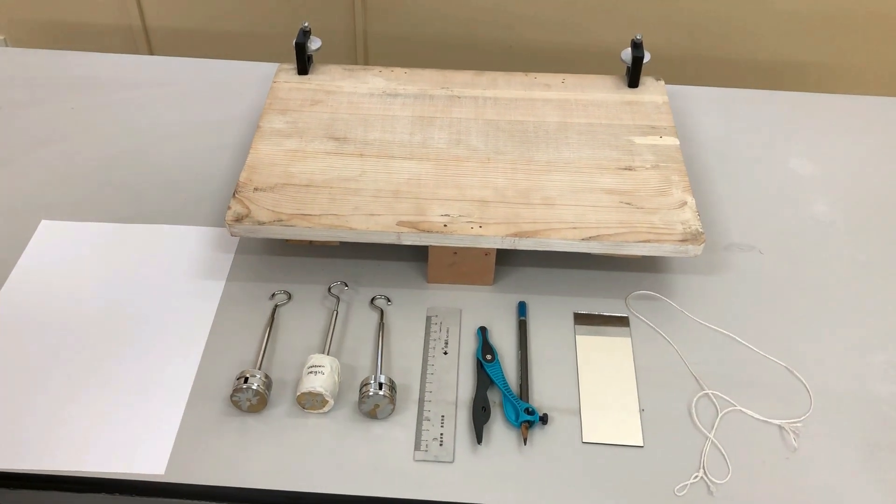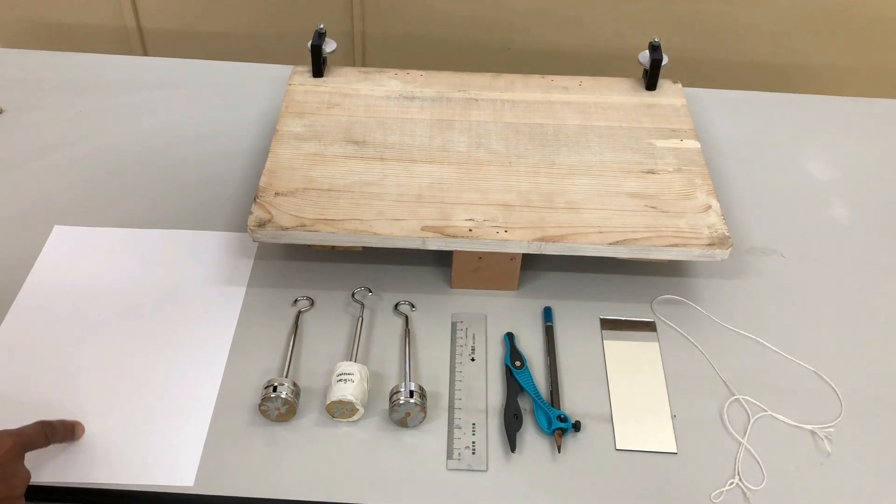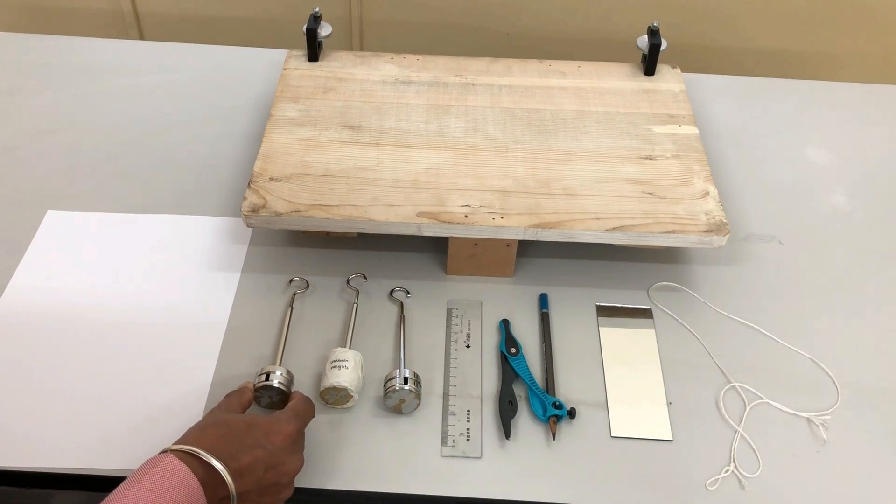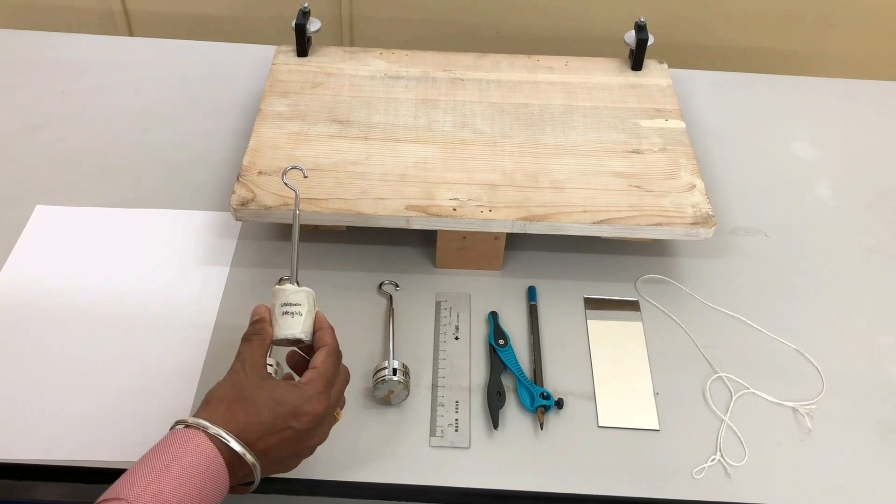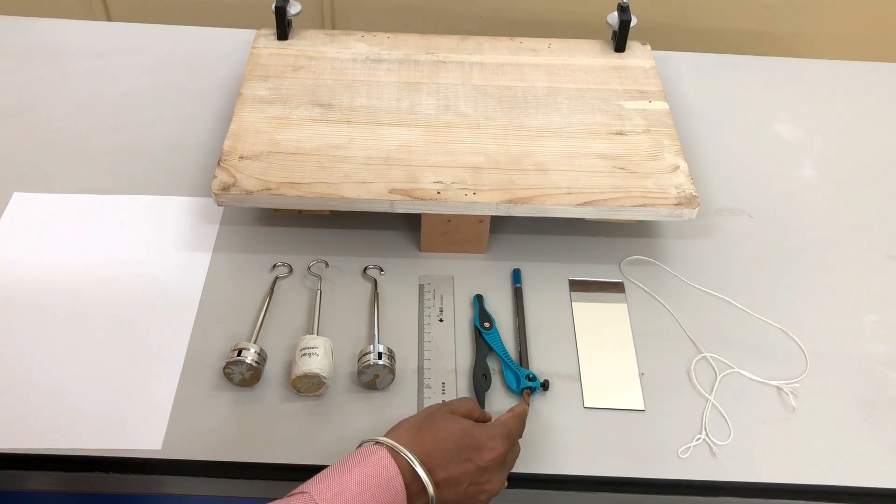The apparatus needed for this experiment are a white sheet of paper, slotted weight with hangers, you need to have an unknown weight, a scale, compass, and a pencil.